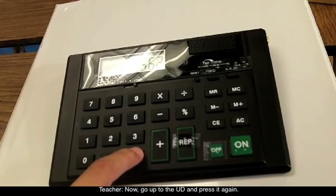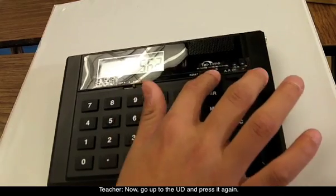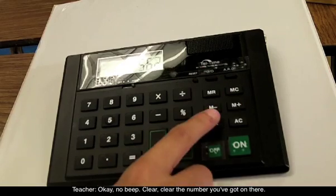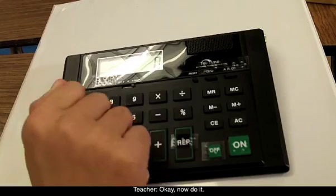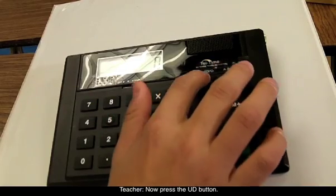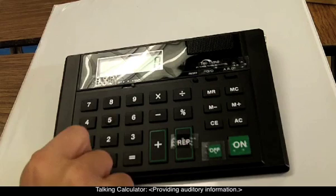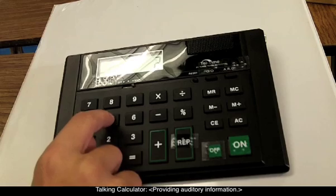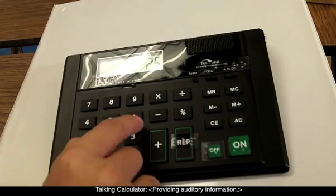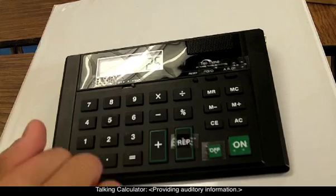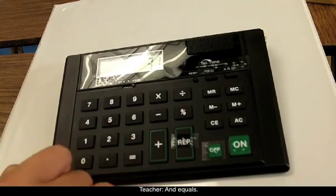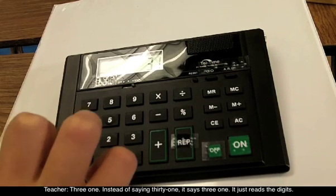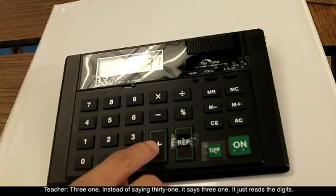Now go up to the UD and press it again. Clear the number you've got on there. Clear. Now press the UD button. Now when it beeps twice, put a number in, like two, two, five. Five. Plus. Plus. Six. Six. And equals. Equals. Three, one. Three, one. Instead of saying thirty-one, it says three, one. It just reads the digits.